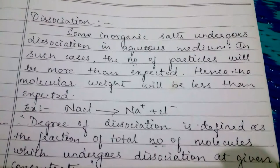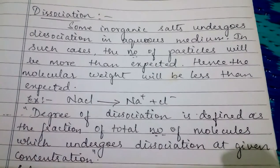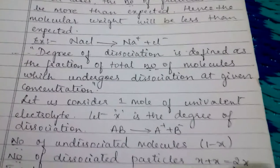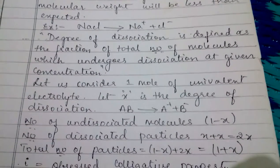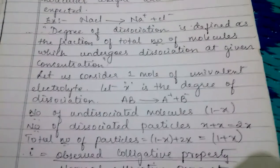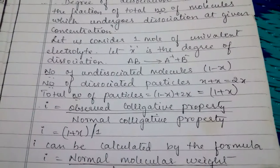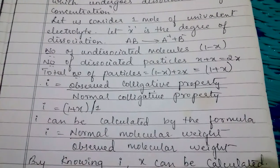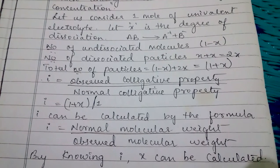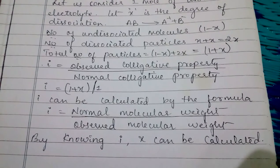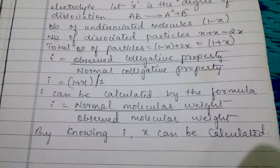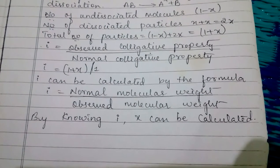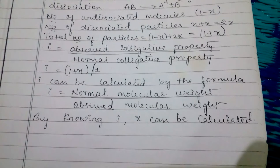Now let us discuss dissociation. Some inorganic salts undergo dissociation in an aqueous medium. In such cases, the number of particles will be more than expected; hence the molecular weight will be less than expected. For example, NaCl gives rise to Na⁺ plus Cl⁻. Degree of dissociation is defined as the fraction of total number of molecules which undergoes dissociation at a given concentration. Consider 1 mole of a univalent electrolyte AB. Let X be the degree of dissociation. AB gives rise to A⁺ plus B⁻. Number of undissociated molecules = 1 minus X; number of dissociated particles = X + X = 2X. Total number of particles = 1 minus X plus 2X, which equals 1 plus X. Therefore i equals (1 + X) / 1. i can also be calculated by the formula i equals normal molecular weight divided by observed molecular weight. By knowing i, X can be calculated.